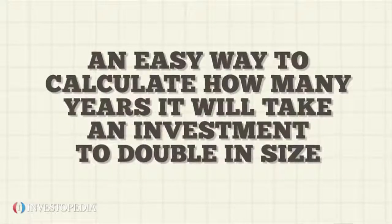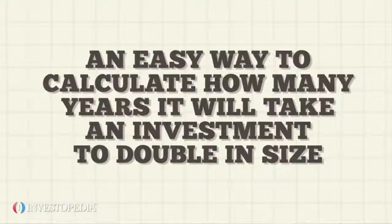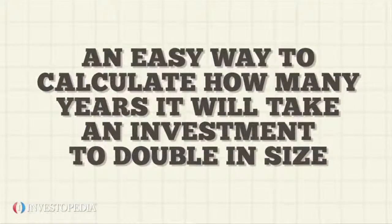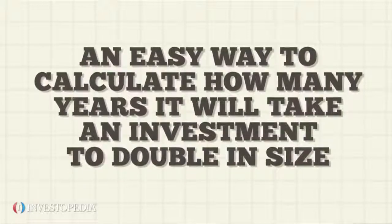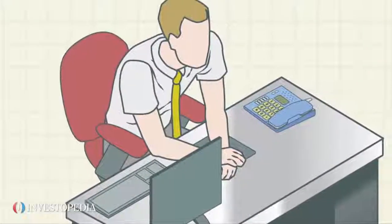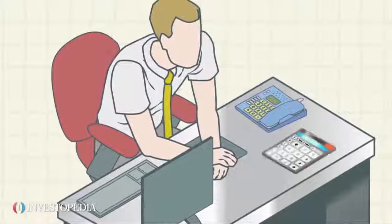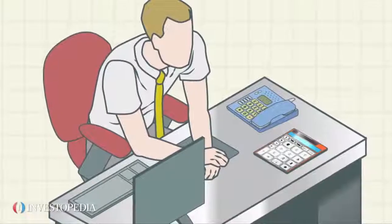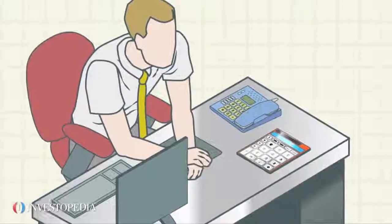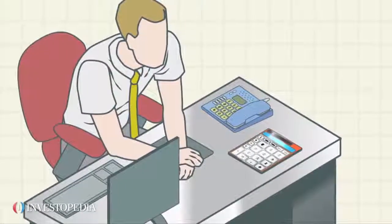The rule of 70 is an easy way to calculate how many years it will take an investment to double in size. There are more sophisticated and accurate ways to make the calculation, but many investors use the rule of 70 for quick estimates.